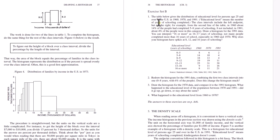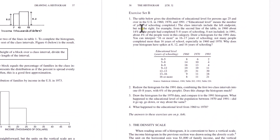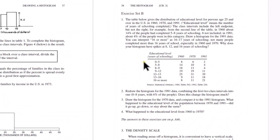In this video, we're going to work an example problem where we draw a histogram. We're going to answer these four questions from section two of the histogram chapter. The table gives the distribution of education levels for persons age 25 and over in the U.S. in 1960, 1970, and 1991. Education level means the number of years of schooling completed.